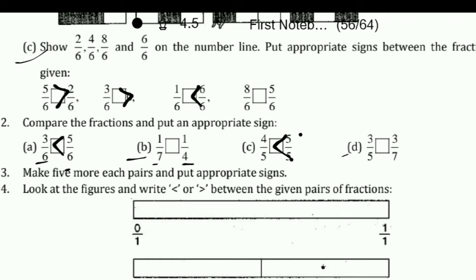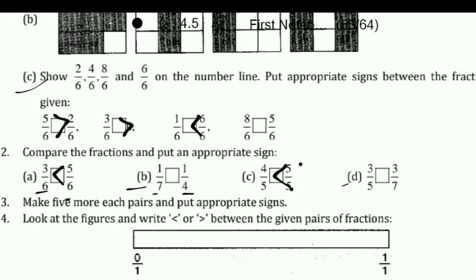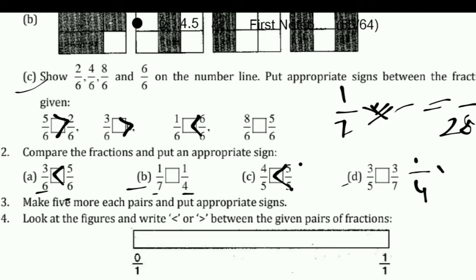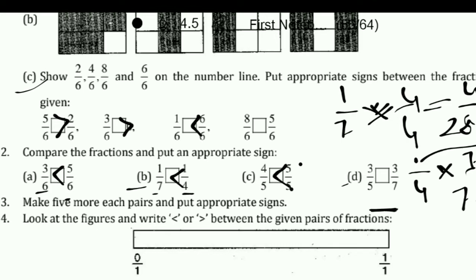So first we make the denominators the same. LCM will come 28. For 1 upon 7, we multiply by 4 to get 4 upon 28. For 1 upon 4, we multiply by 7 to get 7 upon 28. Now comparing 4 upon 28 and 7 upon 28: 7 upon 28, which is 1 by 4, is greater. Like this, you can solve this question.